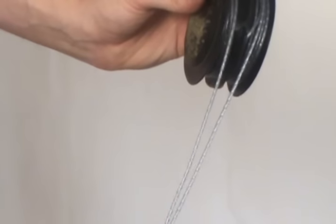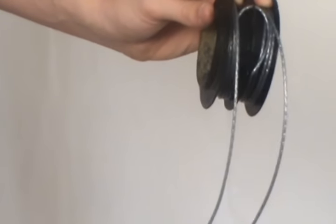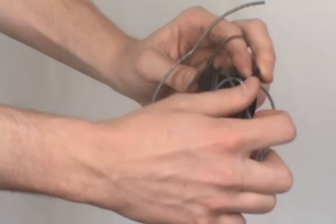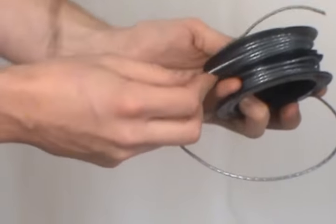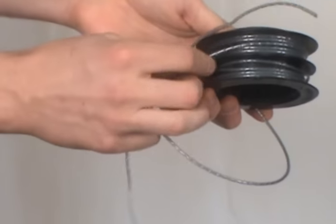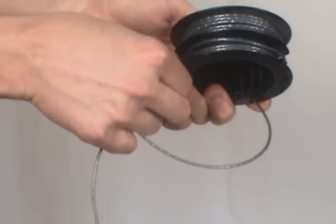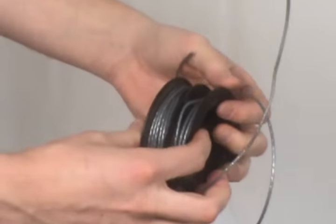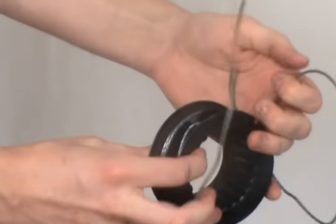Once you have about a foot of line left, take each end and hook it into the outer slots on the spool. That way you have your two trimmer ends.